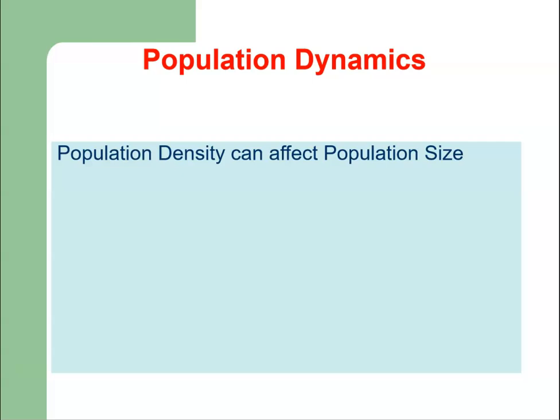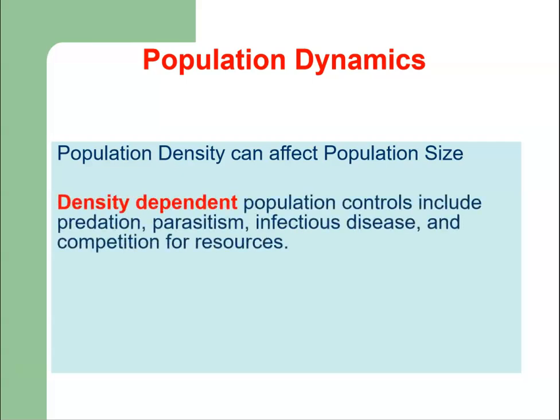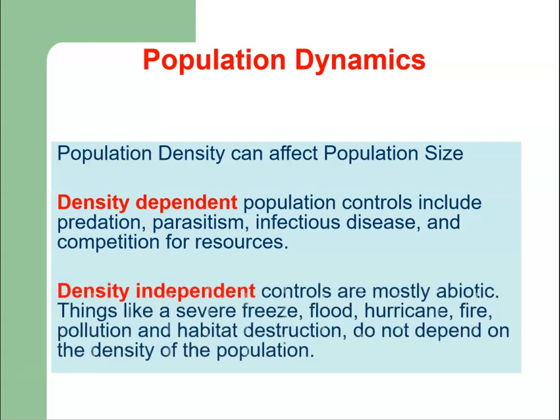Population density can affect population size. Density-dependent population controls include predation, parasitism, infectious disease, and competition for resources. Then we have density-independent controls, which are mostly abiotic factors like a severe freeze, flood, hurricane, fire, pollution, and habitat destruction — these do not depend on the density of the population.